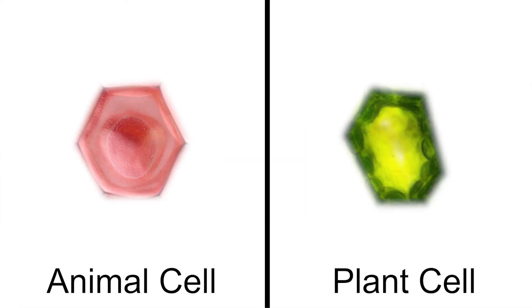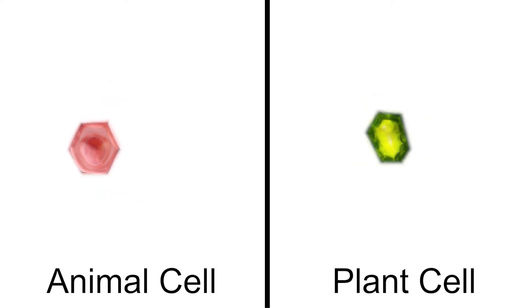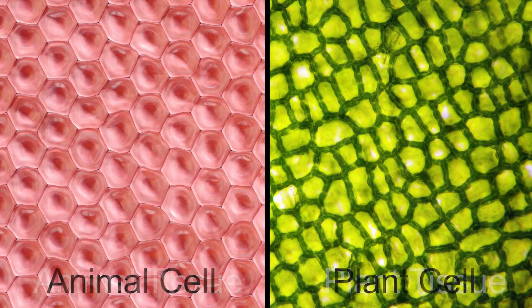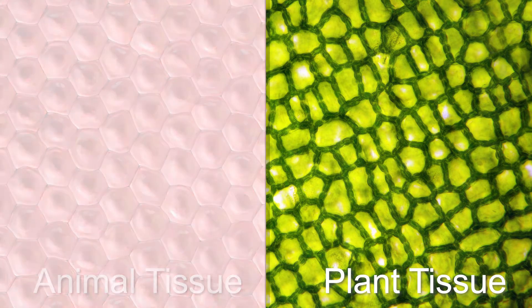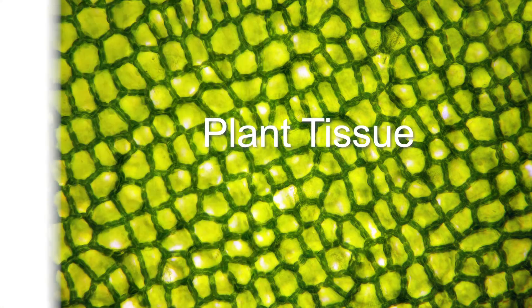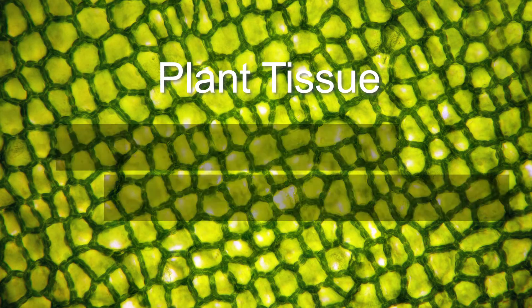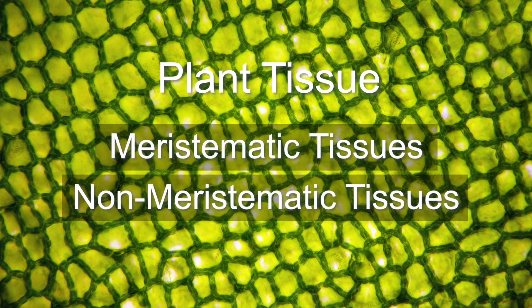In the body, cells that perform the same activity group together to perform certain functions. These cells are called tissues. Plant tissues include meristematic and non-meristematic tissues.